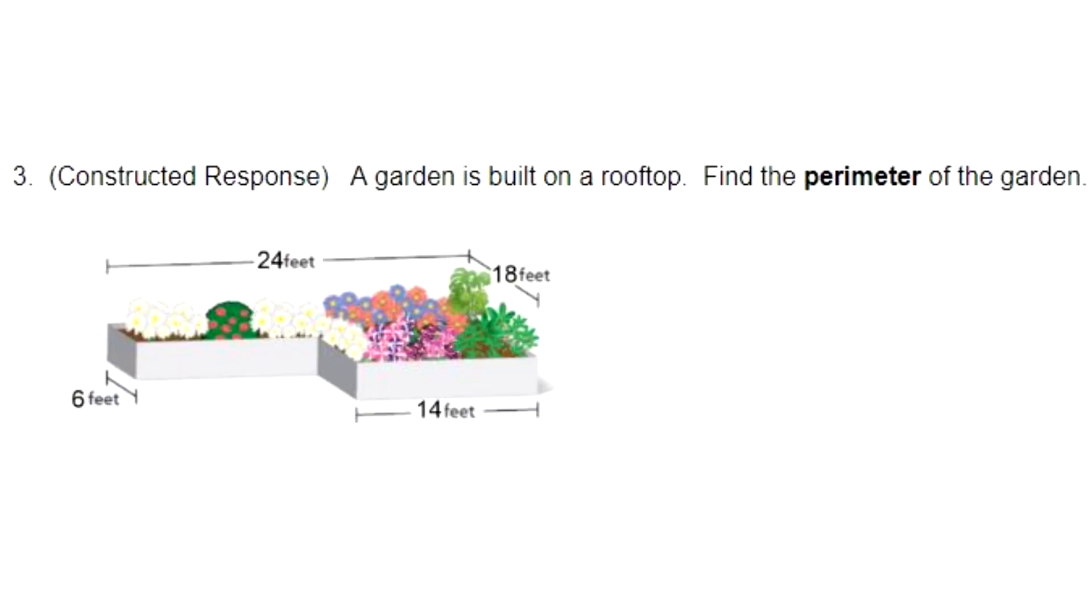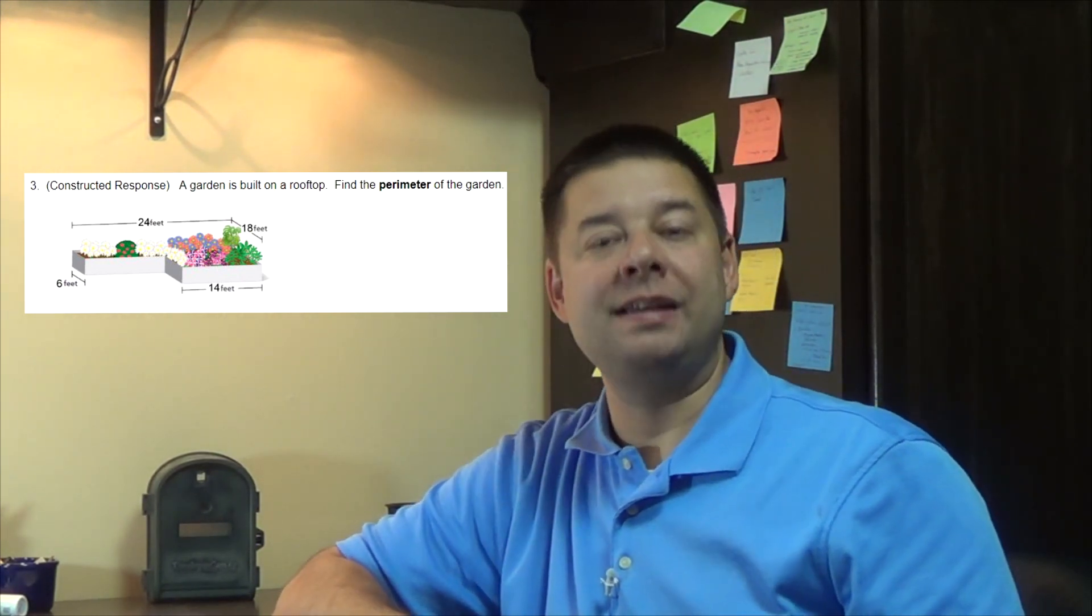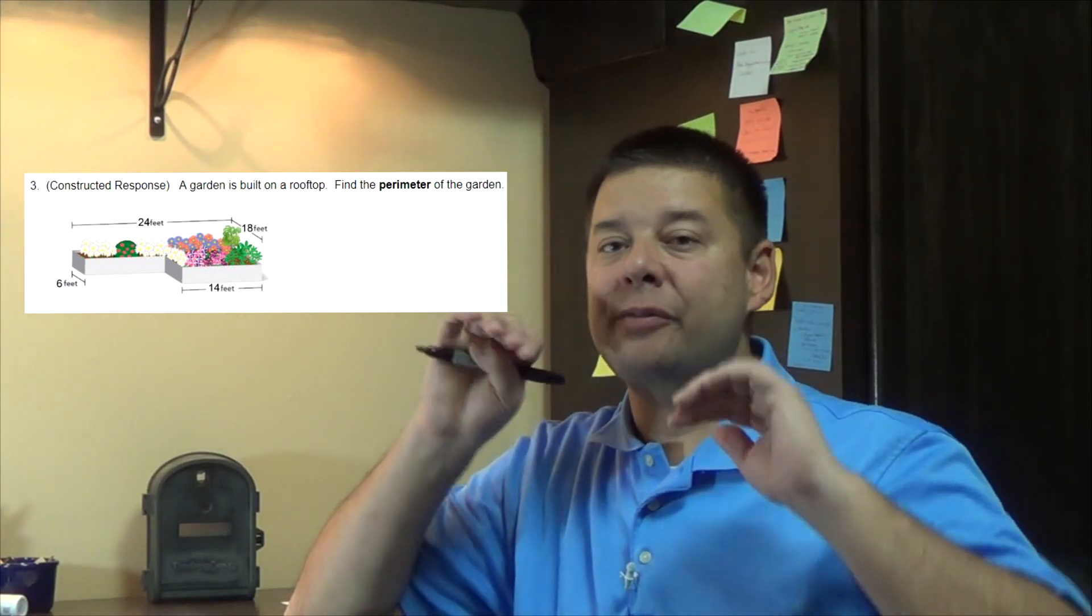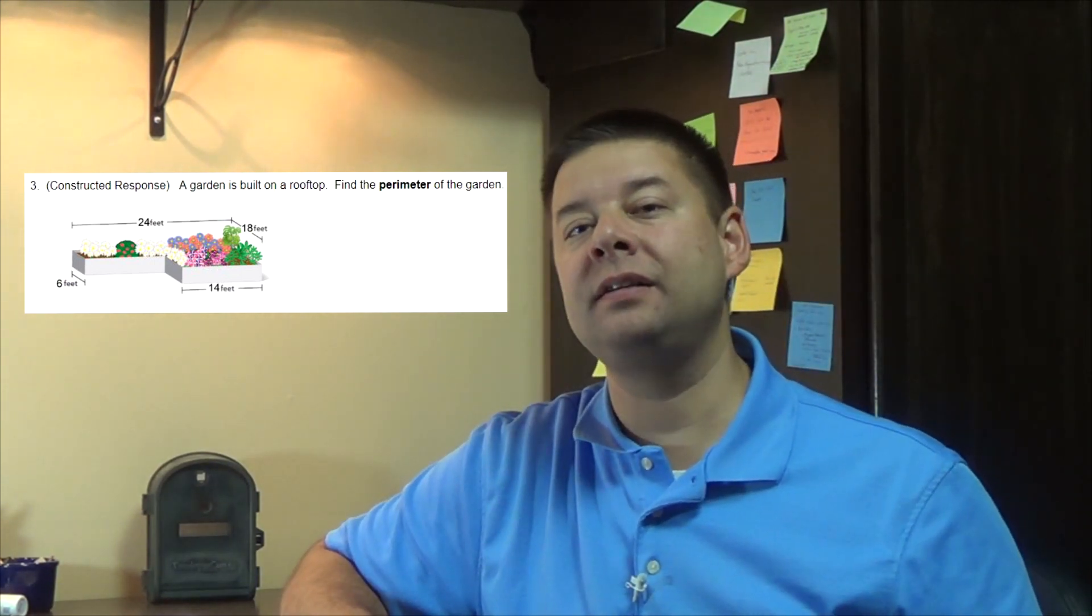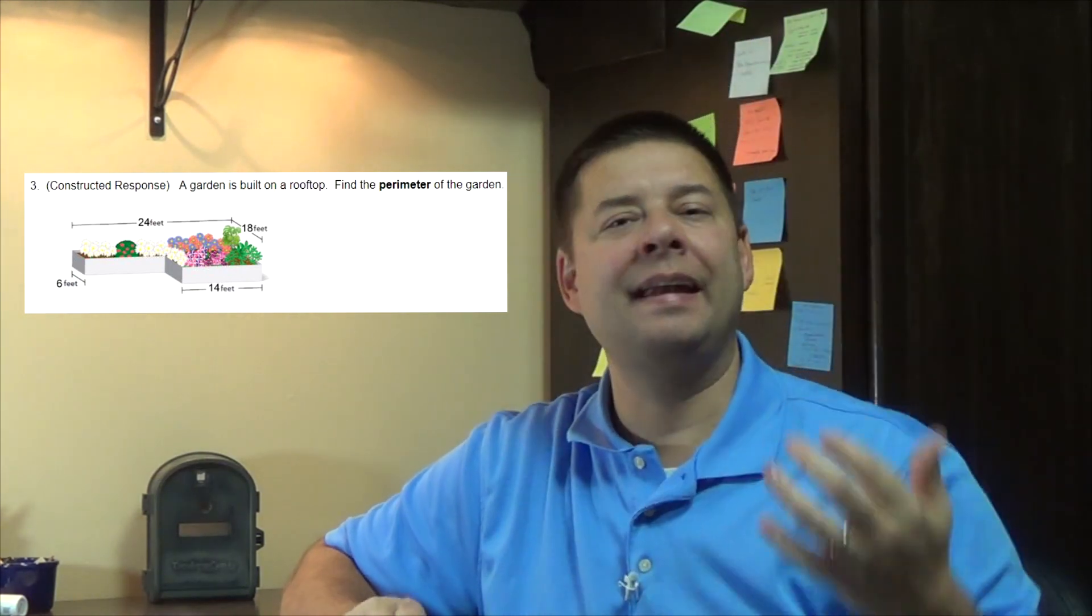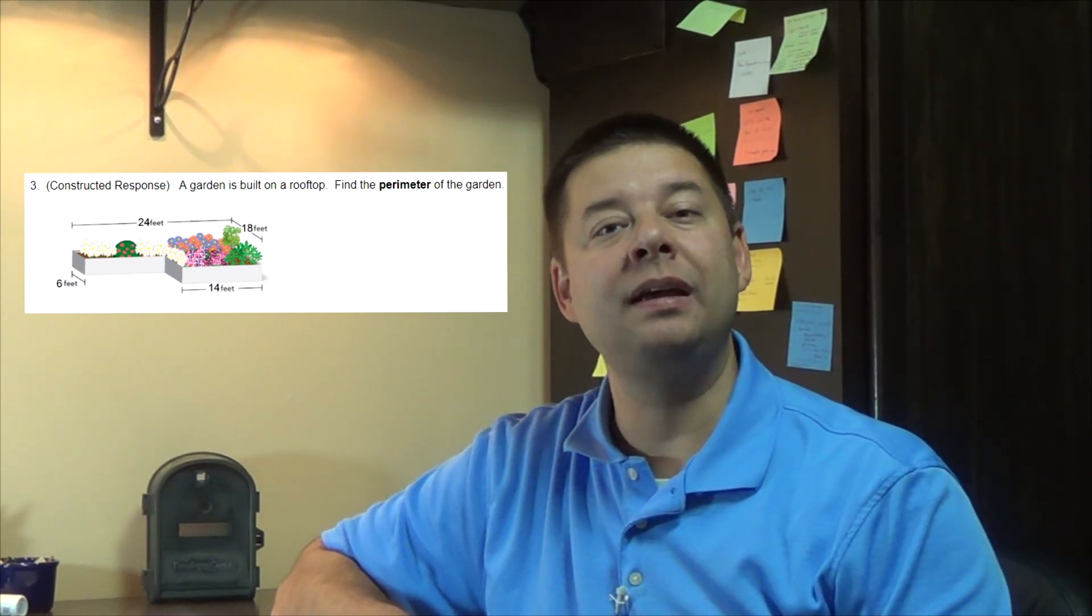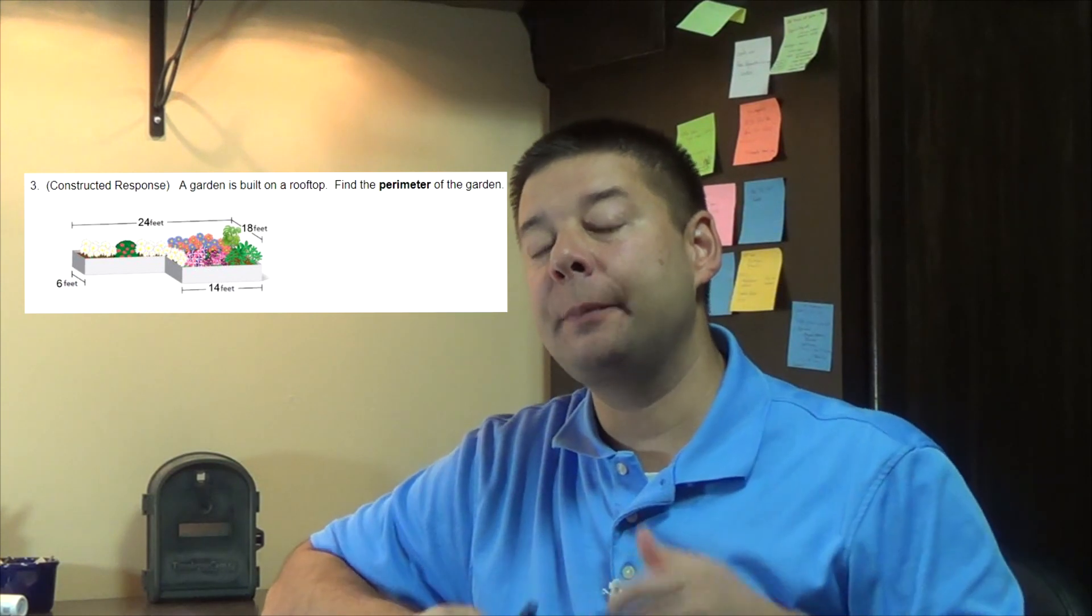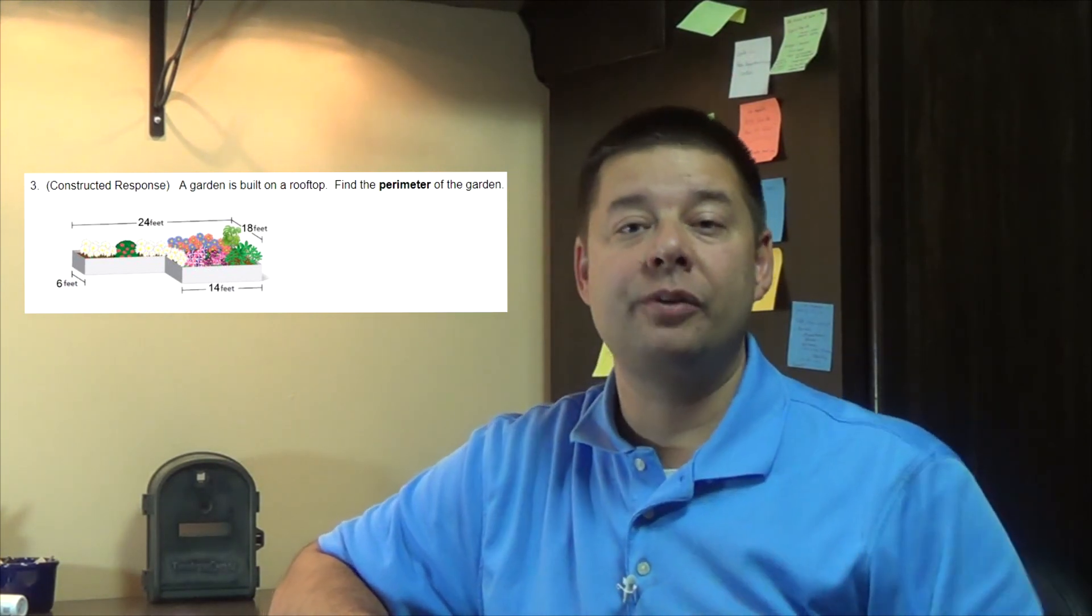Number 3 says a garden is built on a rooftop. Find the perimeter of the garden. Okay so for this one we've got a garden that looks kind of 3D-ish, we're looking at it from the front and looking back at it. I like to use a strategy here where I draw that garden from like a bird's-eye view from up top. When I can look at it that way it kind of helps me to visualize and see where the edges would be, see what shape I'm dealing with and ultimately helps me figure out the unknown measurements of the sides I don't know. So I'm going to do that right now.